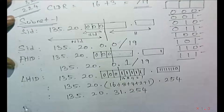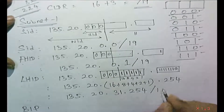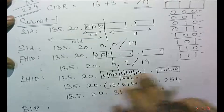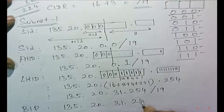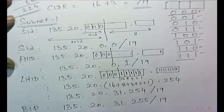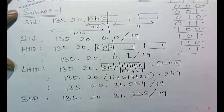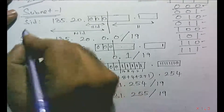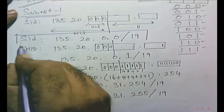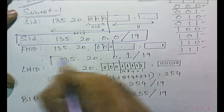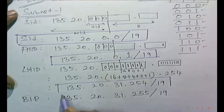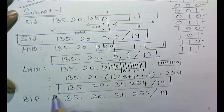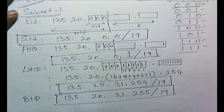The broadcast IP address: make everything 1 in the host part, including the last bit. For subnet 1, that gives 135.20.31.255. So for subnet 1: subnet ID is 135.20.0.0/19, first host ID is 135.20.0.1/19, last host ID is 135.20.31.254/19, and broadcast IP address is 135.20.31.255/19.